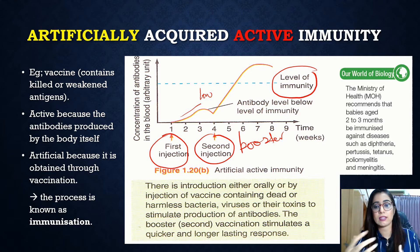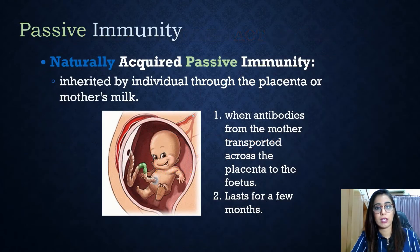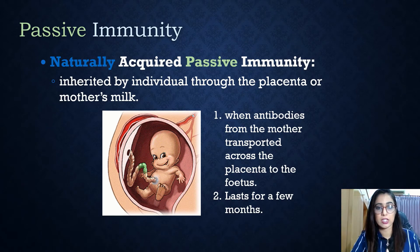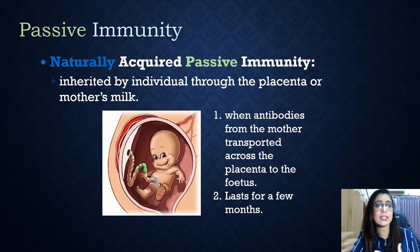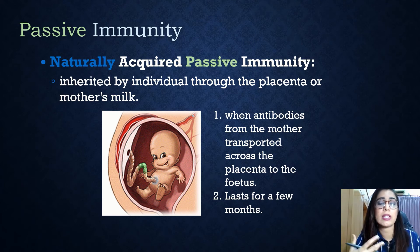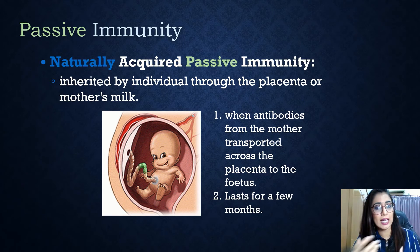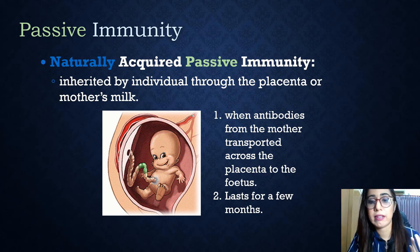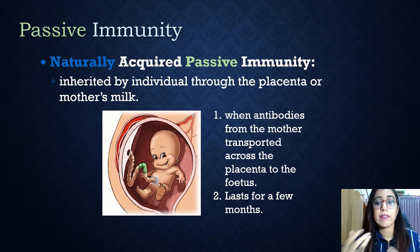Now let's look at passive immunity. Natural passive immunity is inherited by the individual through the placenta — it's acquired by the fetus when the mother's antibodies diffuse through the placenta into the blood flow of the fetus. The antibodies also protect the baby for the first few months after birth through antibodies found in the mother's milk during breastfeeding.